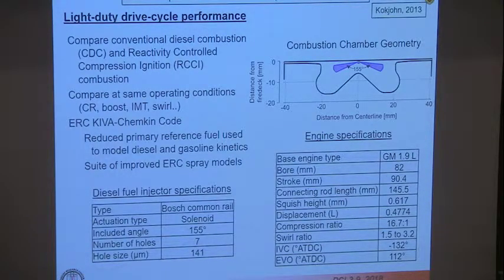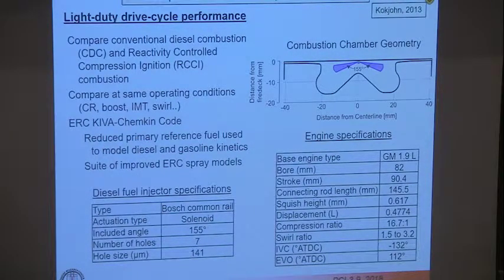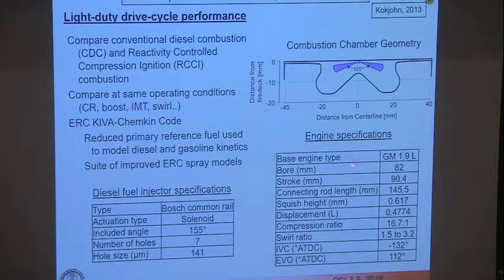We explored RCCI combustion in a variety of different engines, including heavy duty and light duty. We wanted to compare conventional diesel combustion with RCCI combustion. The light duty engine used was a Bosch common rail with 155-degree included spray angle, 7-hole nozzle, 140-micron hole size — a GM 1.9 liter geometry engine, 82mm bore, roughly half-liter displacement, 16.7 compression ratio. This work is from Sage Cook-John's PhD thesis.